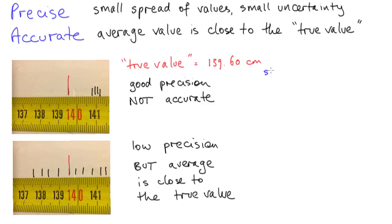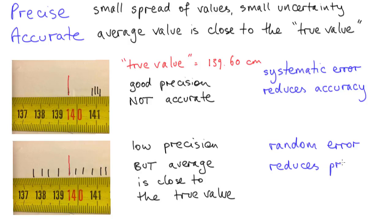You might notice that accuracy and precision are closely related to the presence of systematic and random errors. An experimental setup that has significant systematic error won't give accurate results. And similarly, large variations in measurements due to random error will mean the results are not precise.